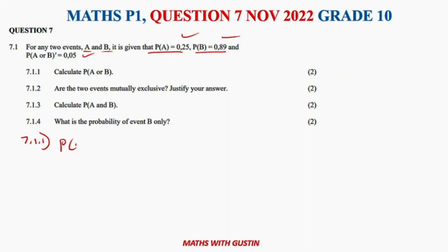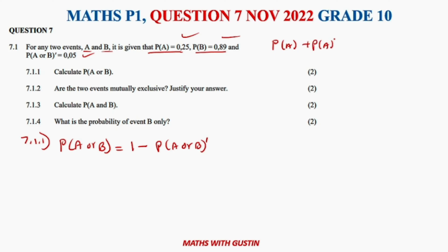When looking for P(A or B), this is a complementary event, so it's simply 1 minus the probability of not getting A or B. Just like P(A) plus P(not A) equals 1, we take the other term to the other side. So 1 minus P(not A or B) gives us 0.93. That's two marks — one for the formula, one for the answer.